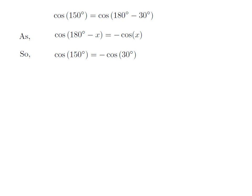Let us apply the above identity for cosine of 150 degree. Here, x is 30 degree, so cosine of 150 degree is equal to minus cosine of 30 degree.